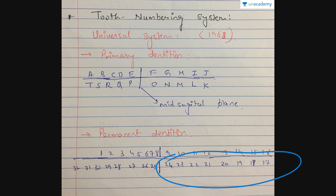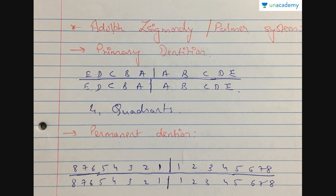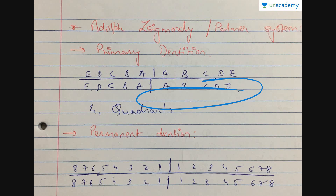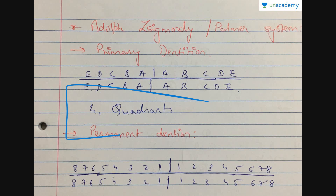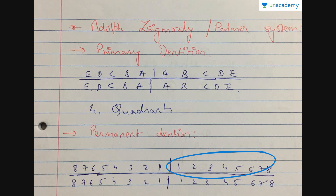In the permanent Universal System, teeth are numbered 1 to 8 in the first quadrant, 9 to 16 in the second, 17 to 24 in the third, and 25 to 32 in the fourth. The next system is the Zsigmondy or Palmer System, which is also divided into primary and permanent dentition. In the deciduous Palmer system each quadrant is labeled A to E, and in the permanent system each quadrant is numbered 1 to 8. I will be explaining this with a diagrammatic example for easy understanding.